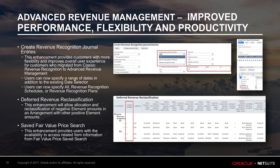Reclassify Deferred Revenue — this enhancement will allow allocation and reclassification of negative element amounts in an arrangement with other positive element amounts. Improved search capabilities regarding fair value price — this enhancement provides users with the availability to access related item information from the fair value price saved search.